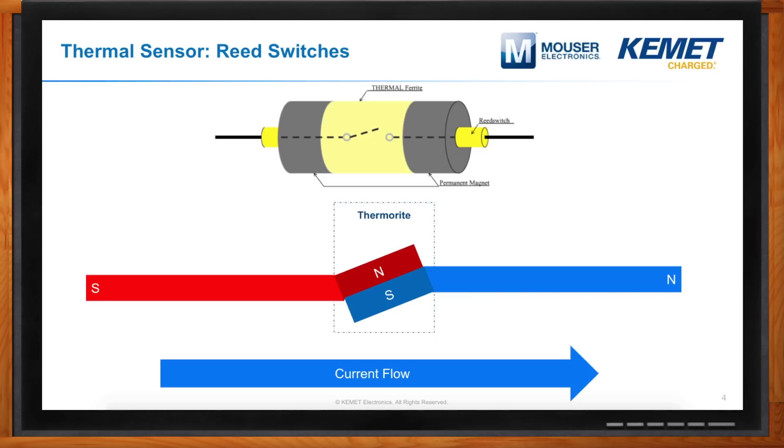Now, in the case of our thermal sensors, those conductors are actually magnets. When you are below the Curie point, those magnets come into contact with one another, and current can flow from one direction to the other. When you go past the Curie point, those magnets separate, and that causes the current to stop flowing. And then once you come back down below the Curie point, those conductors, those magnets, come back into contact with one another, and current can start flowing again.